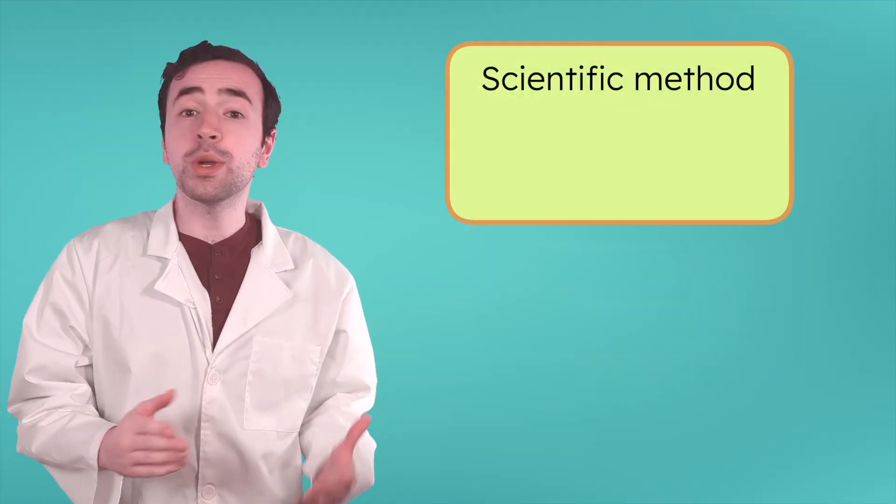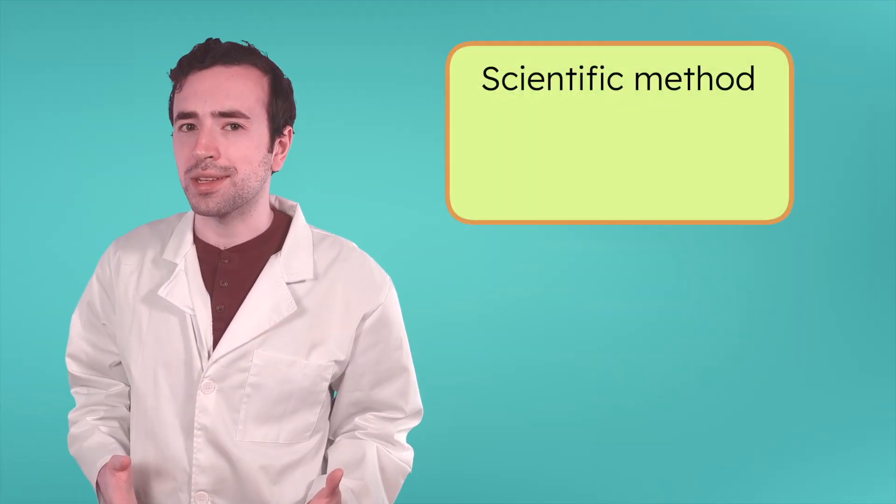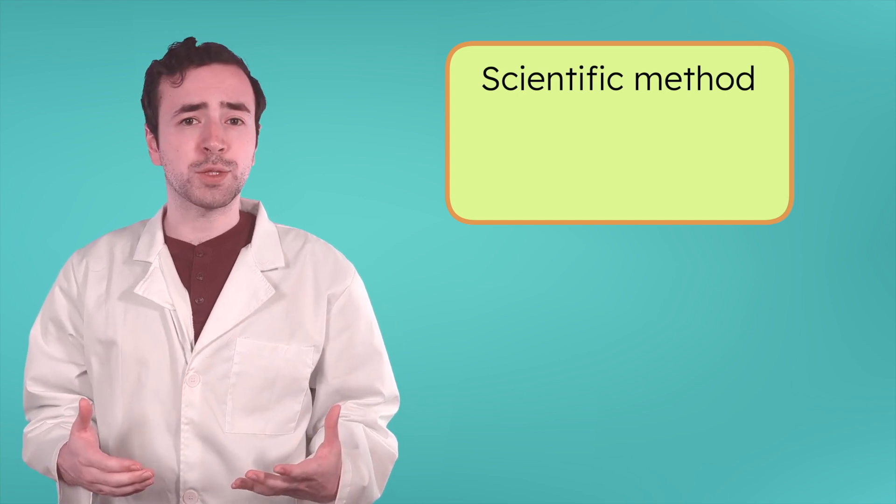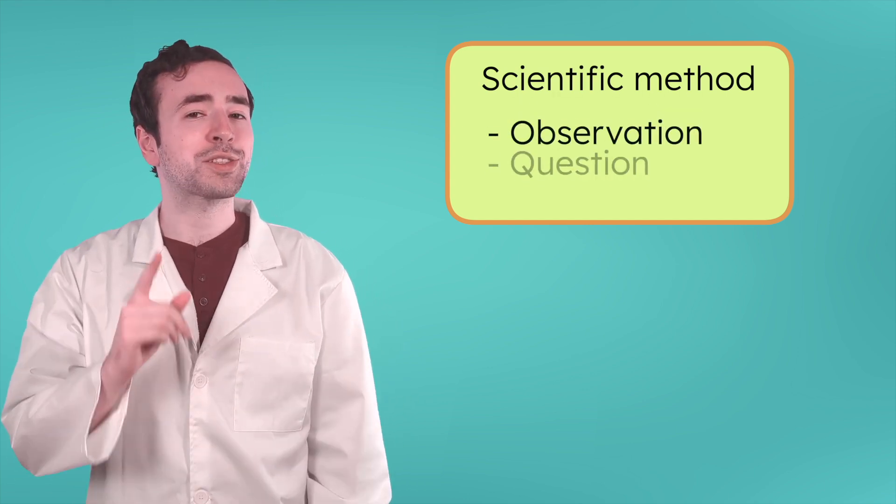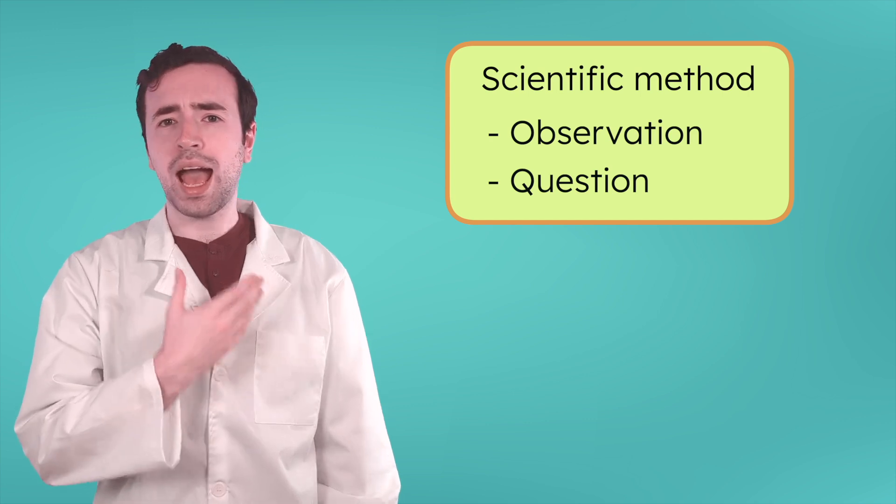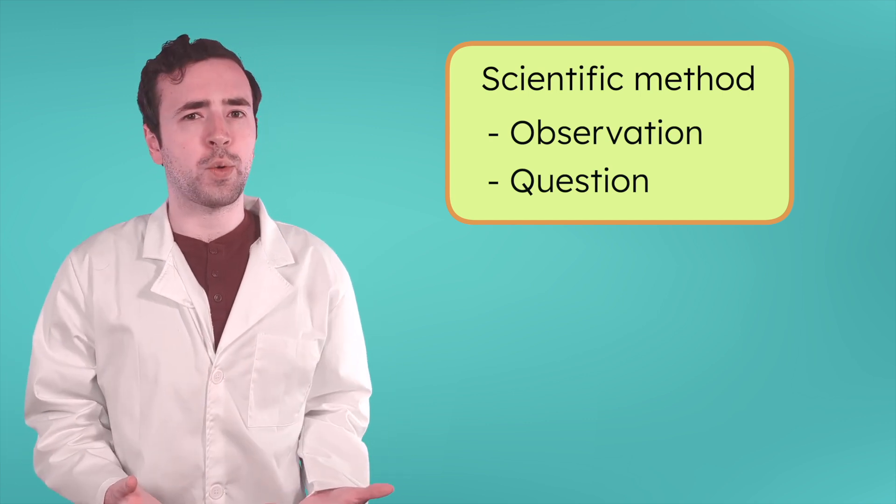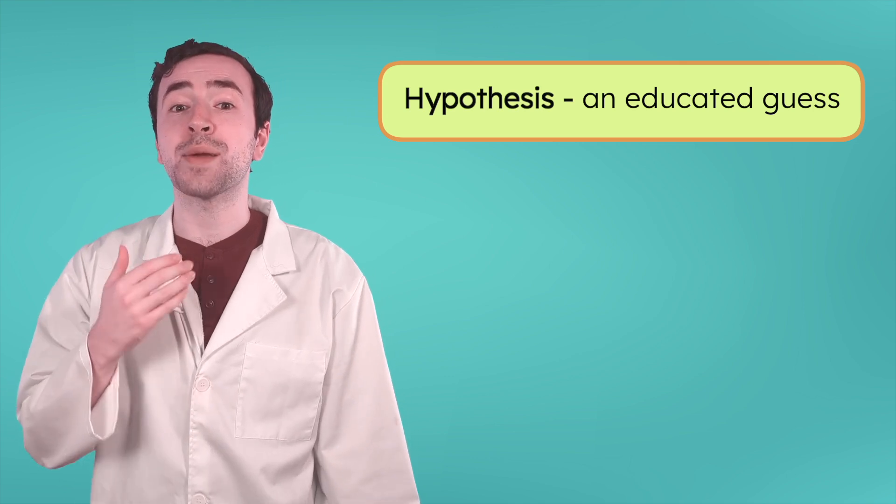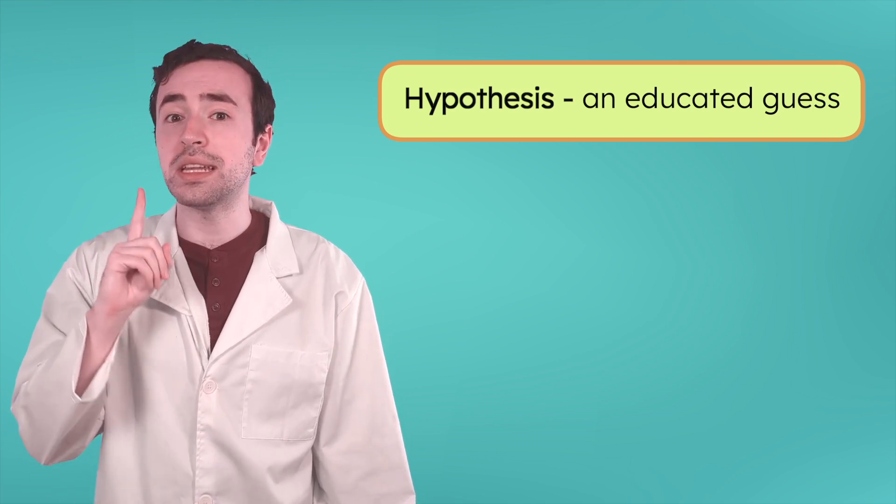In our last lesson, we learned that scientists use the scientific method to learn about the world around us. This set of steps begins with making observations and asking questions. But how do scientists find answers to their questions? The next step of the scientific method is to make a hypothesis, an educated guess.